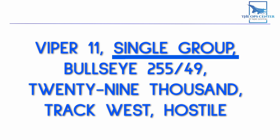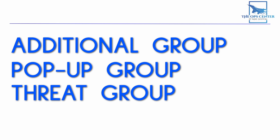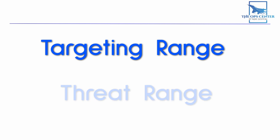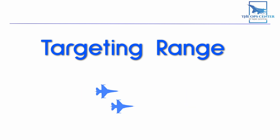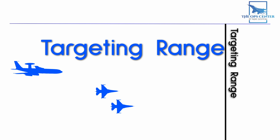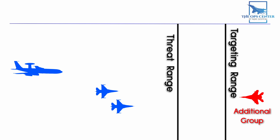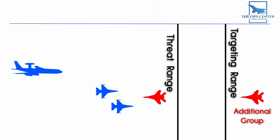There are additional descriptors based on range — specifically targeting range and threat range. Targeting range is a distance agreed upon by the fighters and controllers during planning, used for targeting fighters on hostile aircraft, so it's not a fixed number. Whenever a newly detected group is outside targeting range, it's called an additional group. Threat range also is decided during planning but has a default of 35 nautical miles. New groups within threat range are labeled threat group, and if a new group appears between threat and targeting range, it's called a pop-up group.